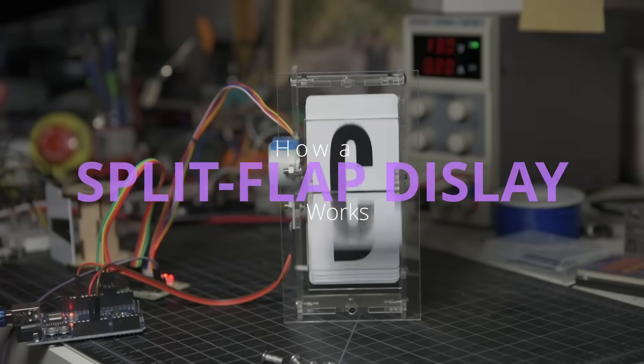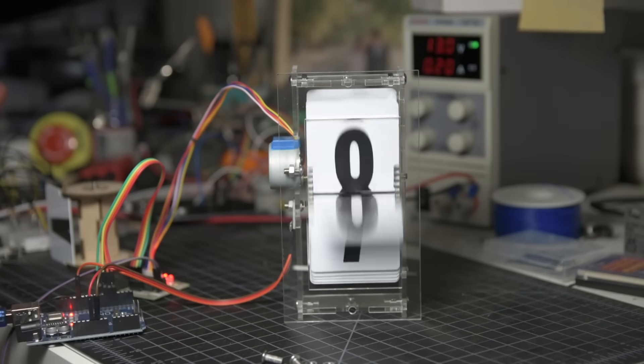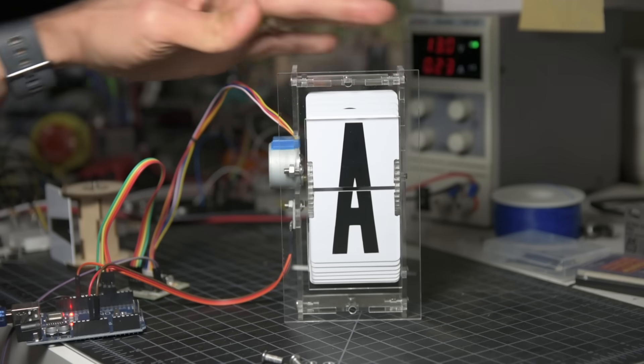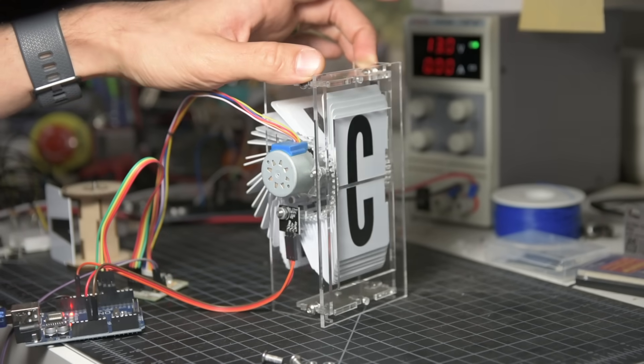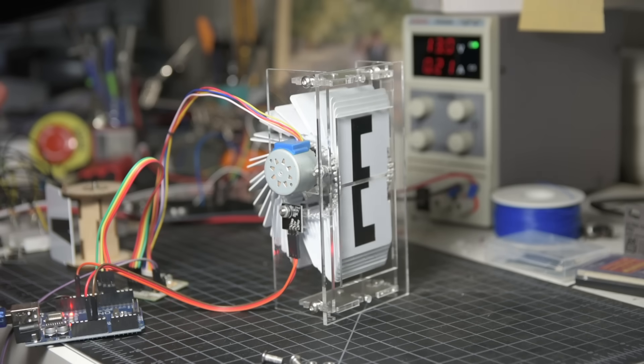Here's how a split flap display works. At its core, a split flap display has a motor connected to a spool that has a bunch of flaps.